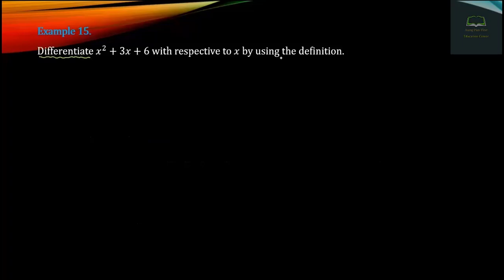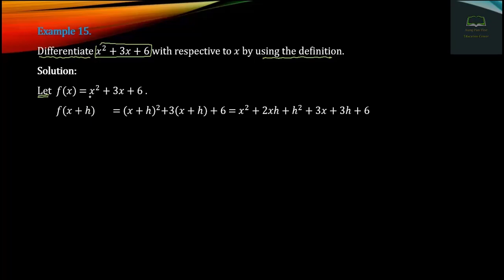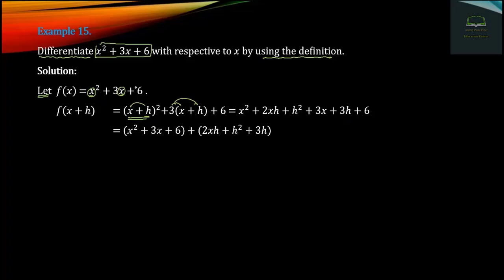Differentiate f of x with respect to x using the definition. The solution is given as f of x plus h. Expanding x plus h squared plus three times x plus h plus six, we write out the terms. Then we can write the expression as 3h plus additional h terms. After simplifying, with one more step, let's go ahead and try.